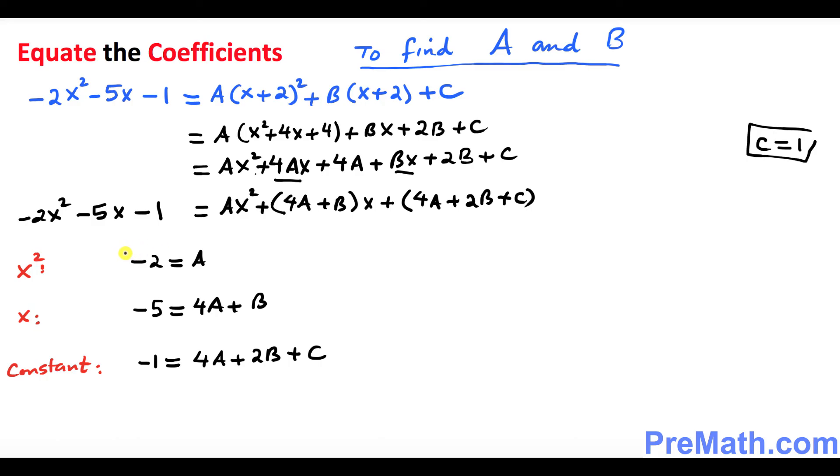So you can see obviously A turns out to be negative 2 as well. Now we know that C equals to 1 over here. We know that already. A equals to negative 2. From here we can figure out this one. We're going to figure out B. So how much that's going to be?